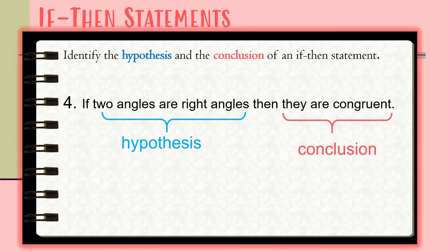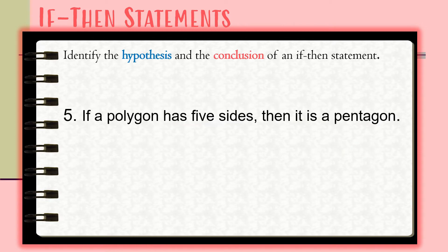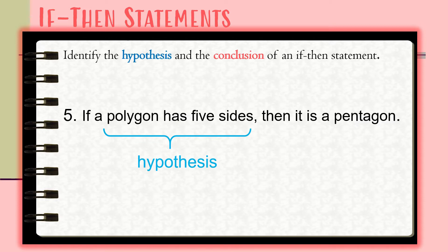For conditional statement number five: 'If a polygon has five sides, then it is a pentagon.' The hypothesis of this statement is 'a polygon has five sides,' and the conclusion is 'it is a pentagon.'